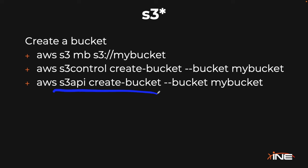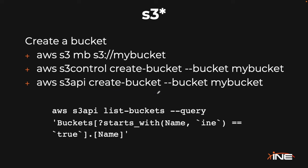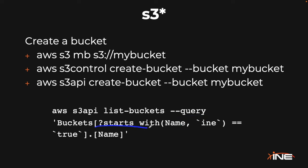Also with the S3api, we can do some pretty fancy querying. For example, finding all the buckets that begin with INE. In this case, query buckets, and we're going to use this query command here. We're going to say it starts with name INE equals true. Basically, this is a Boolean operation — does it start with the name INE? If it's true, we need to see that name. It's a fairly easy command to understand and is available when we're doing things like S3api if needed.